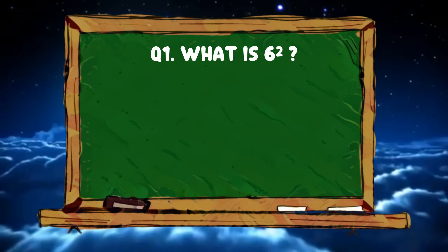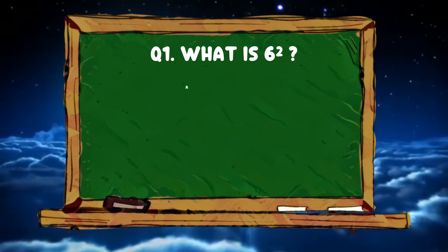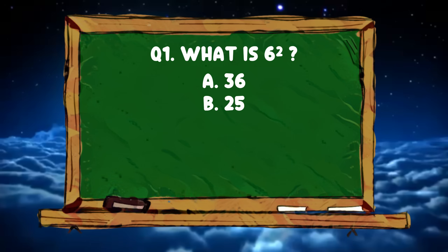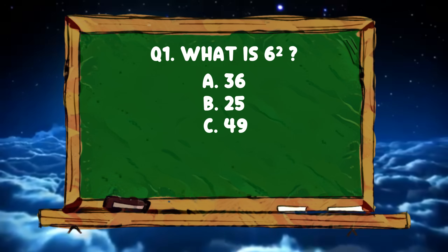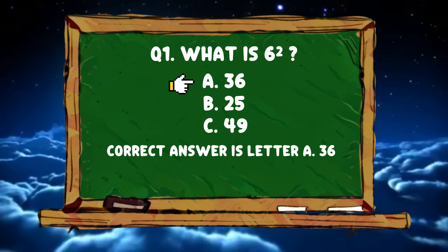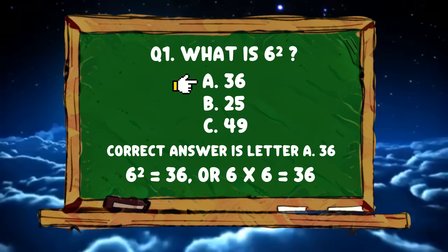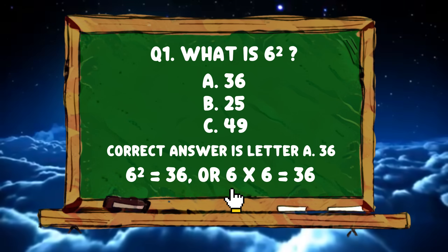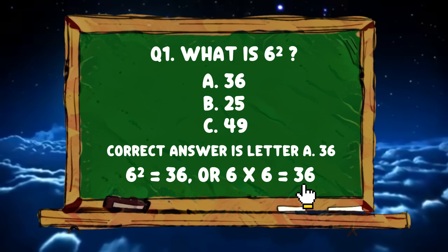And lastly, what is 6 squared? Letter A 36, B 25, or letter C 49. The correct answer is letter A 36. 6 squared is equals to 36. Or 6 times 6 is equals to 36.